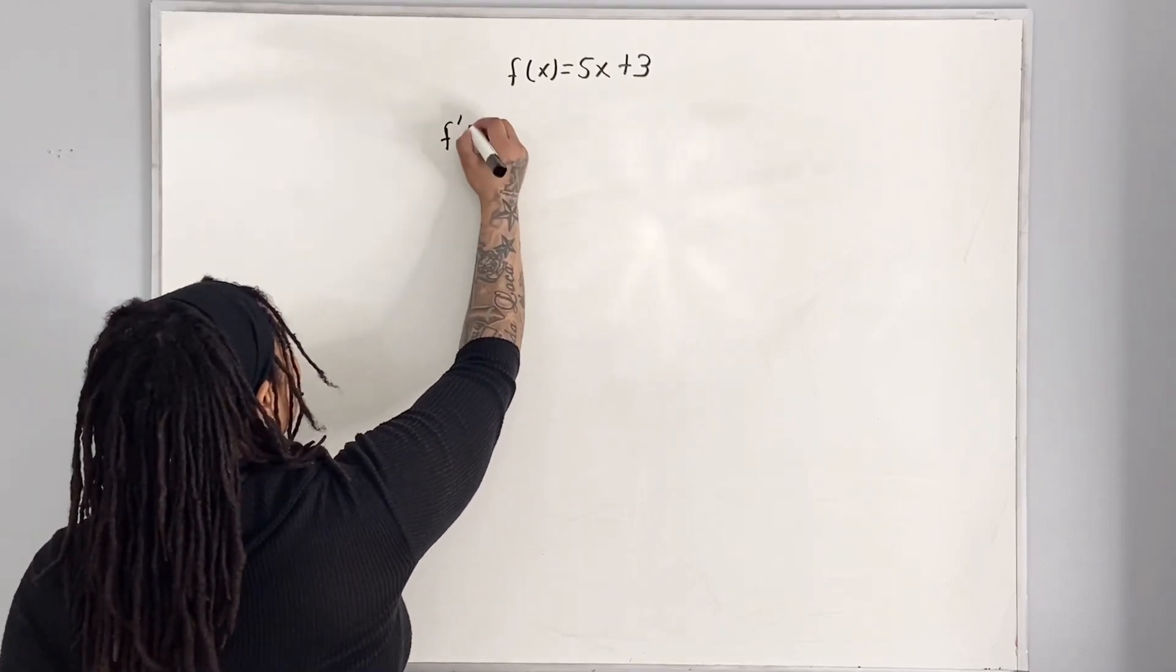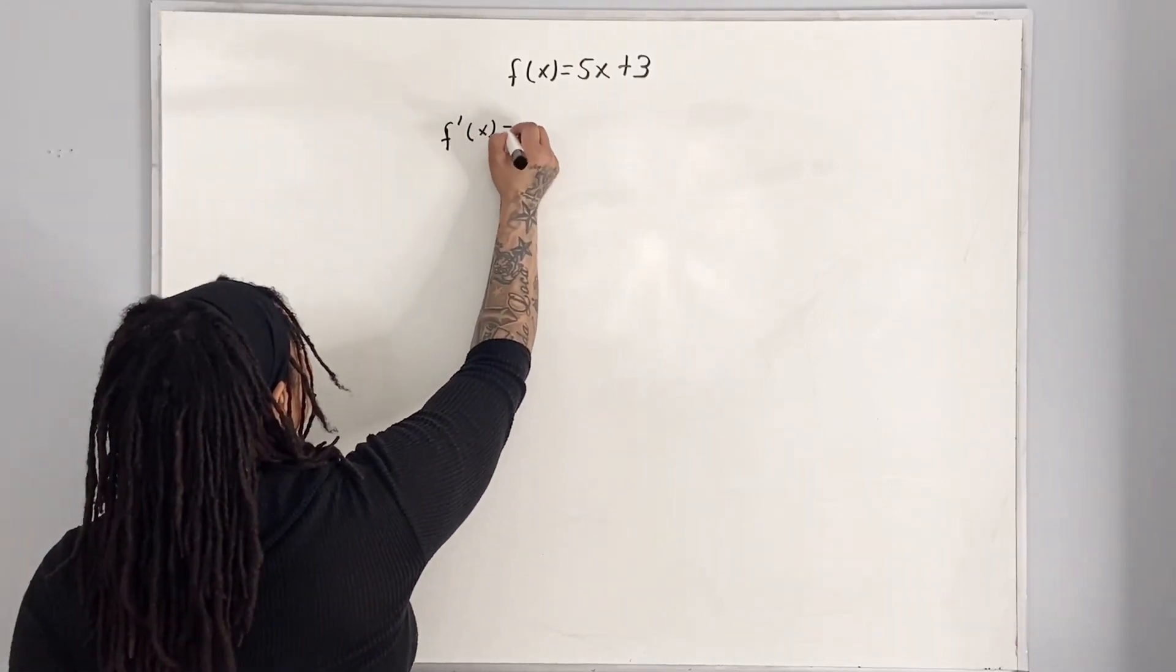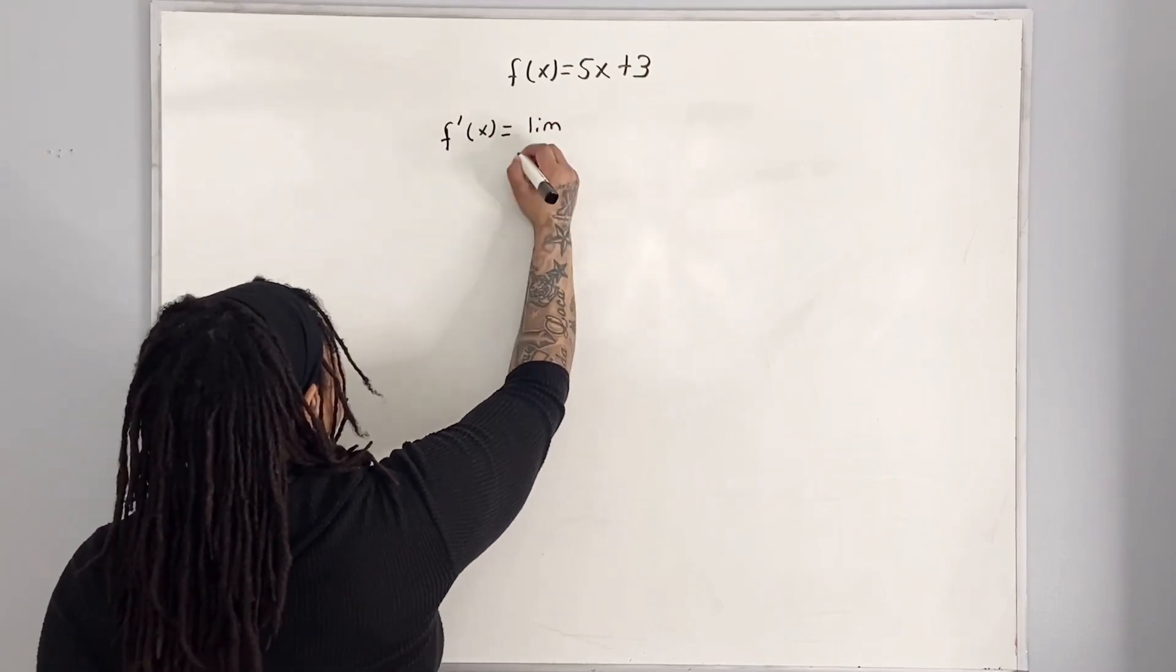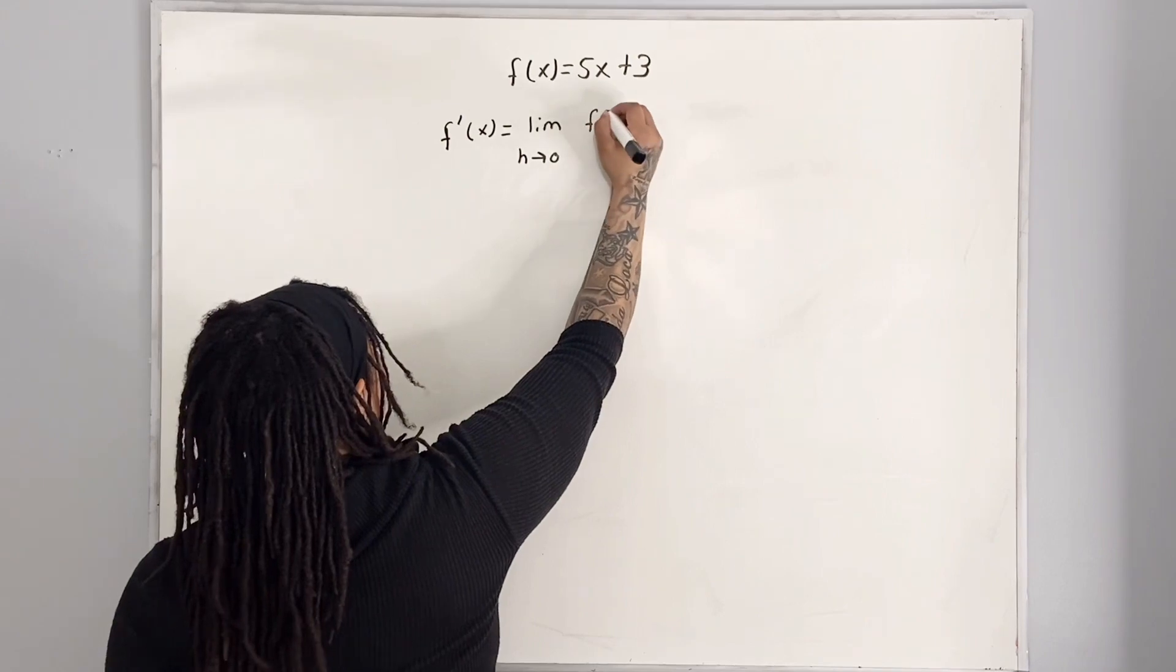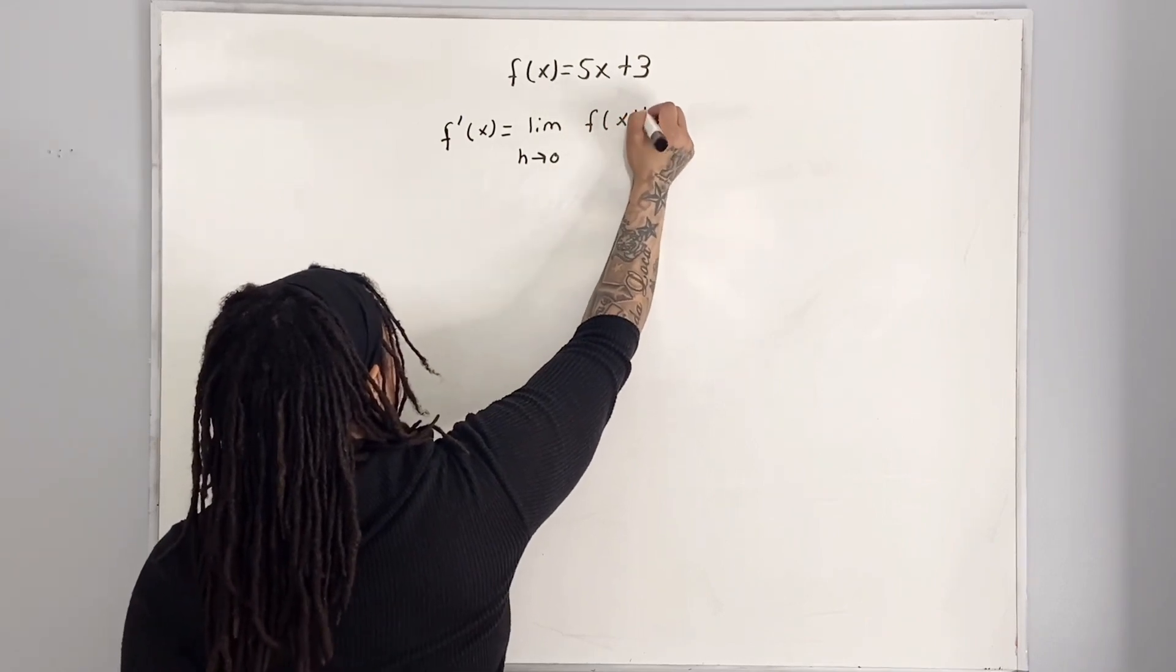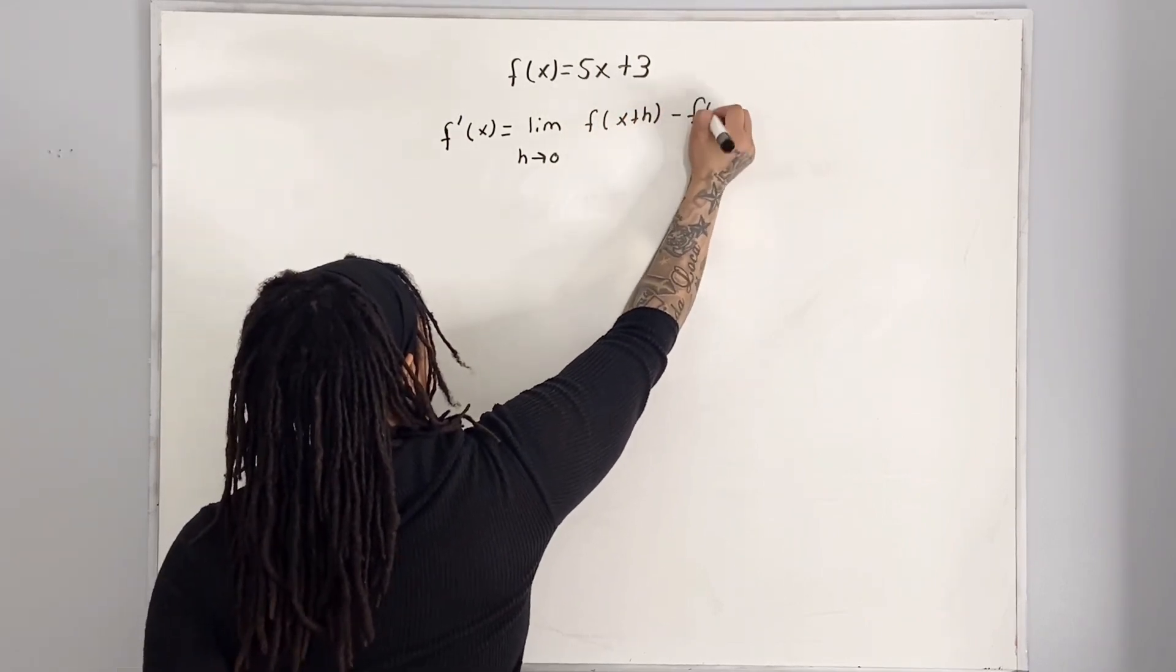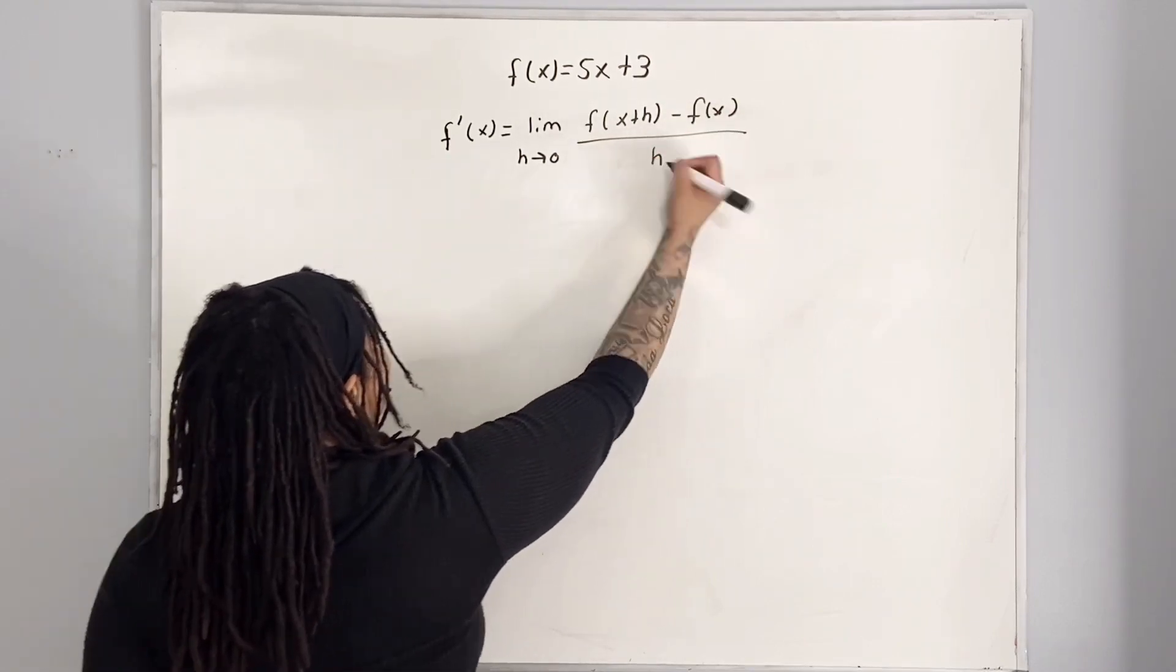f prime of x is equal to the limit as h approaches 0 of f of x plus h minus f of x all over h.